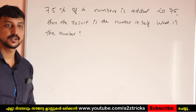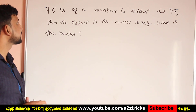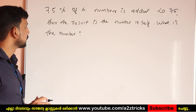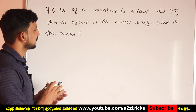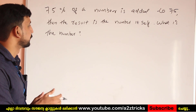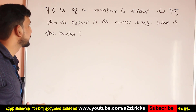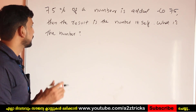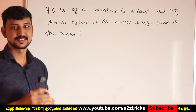The first question is: 75% of a number is added to 75, and the result is the number itself. What is the number?